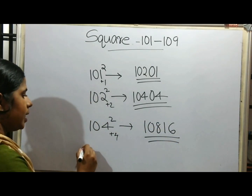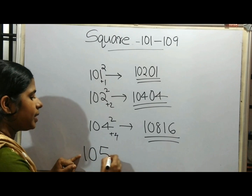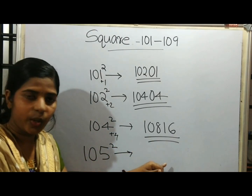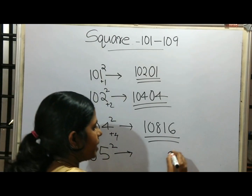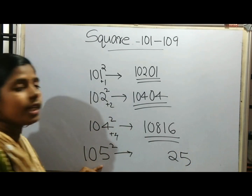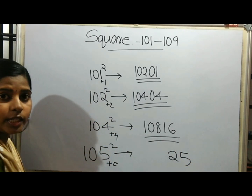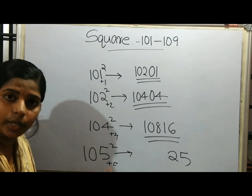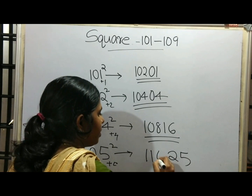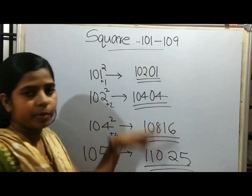For 105 squared, using the same method: 5 squared is 25. 105 plus 5 is 110. Since 25 is not less than 10, we carry over, giving us the answer 11025.